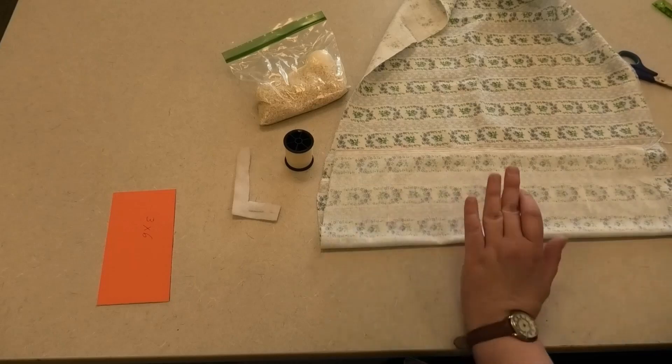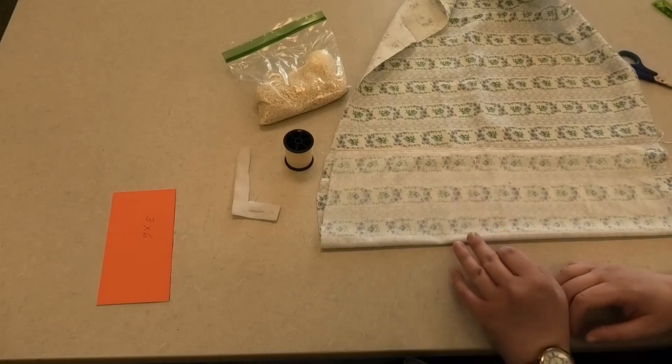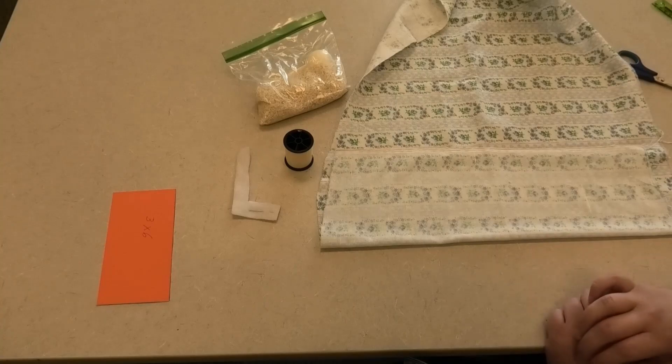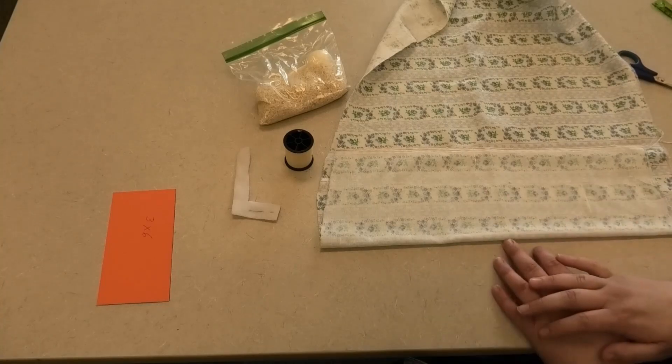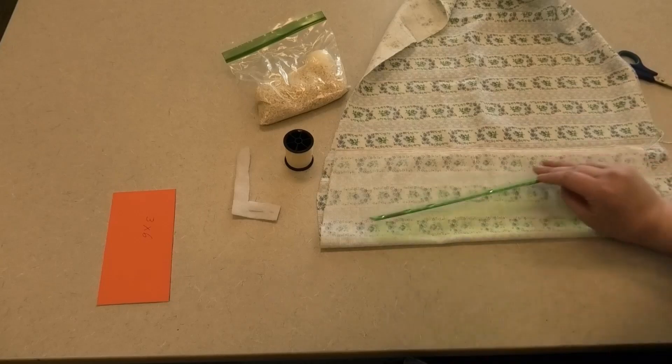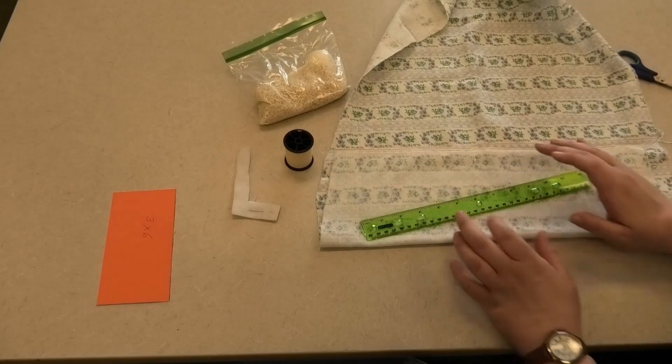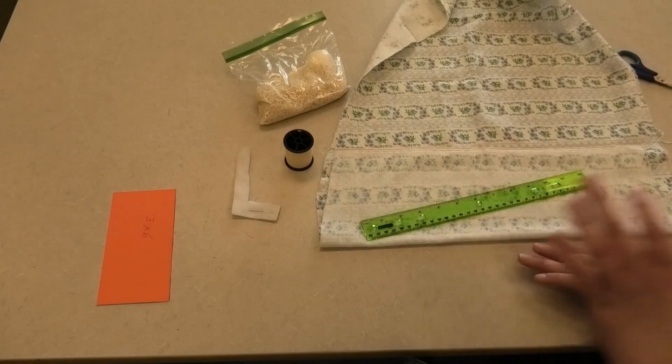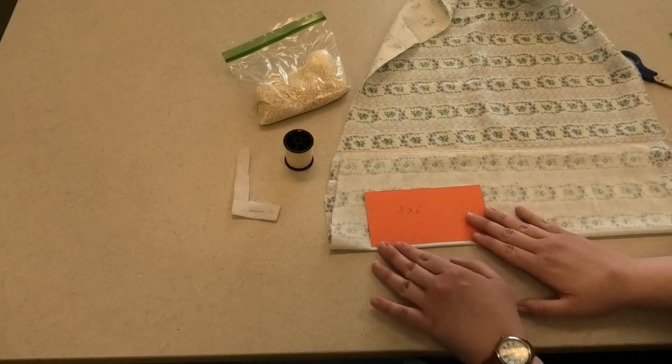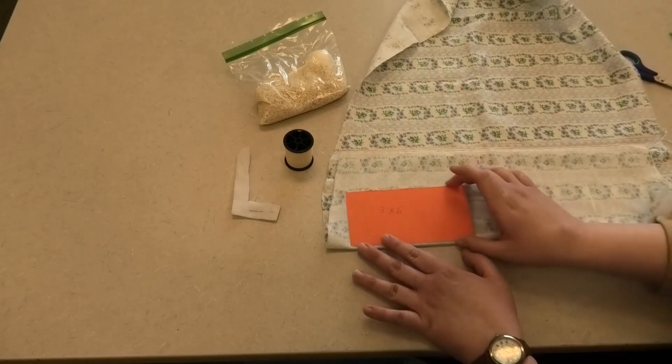As I said before, this bag is going to be three by six inches. You can make it larger or smaller depending on what you need. You'll just need to change the amount of rice used inside the bag depending on your size. You can measure directly onto the material with a ruler, or if you have a cutting mat for fabric you can use that one as well.